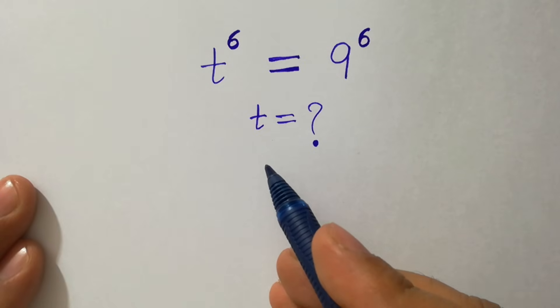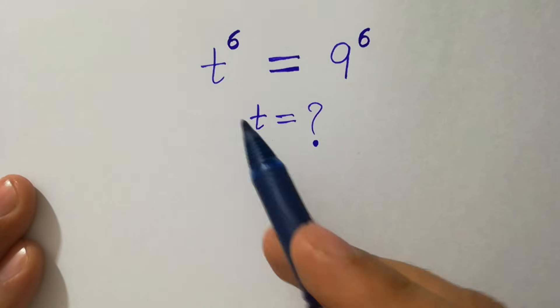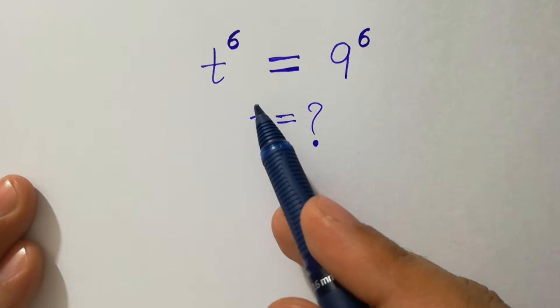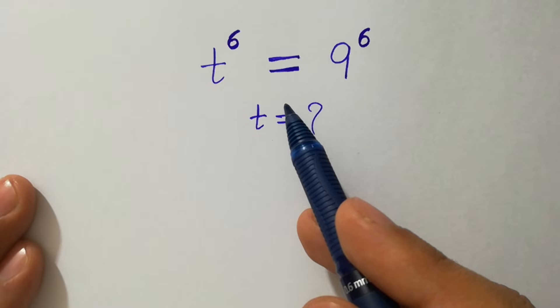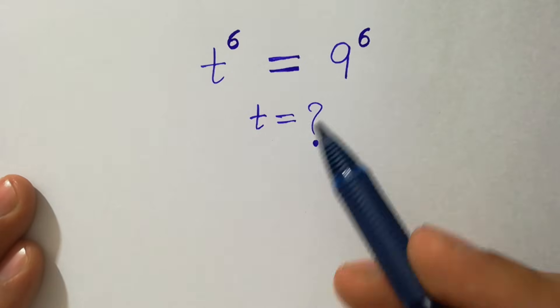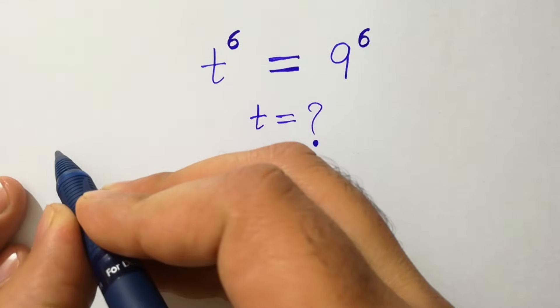Hello friends. Find the value of t if t to the power 6 equals 9 to the power 6. Let's have a solution.